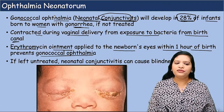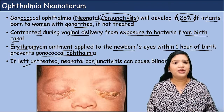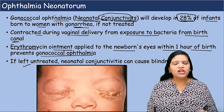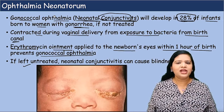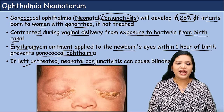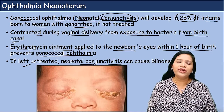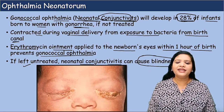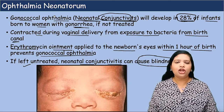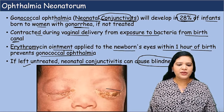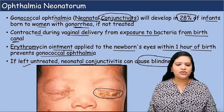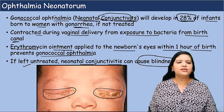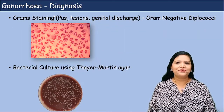If erythromycin is not given — for example, if the woman delivers the baby at home — this will not be done. In that condition, the baby may develop neonatal conjunctivitis, which can even lead to permanent blindness. Look at this picture — the eye is almost completely covered. This condition is called ophthalmia neonatorum.